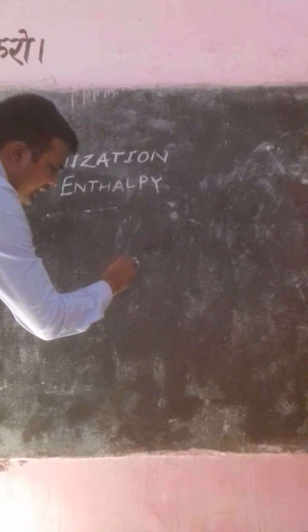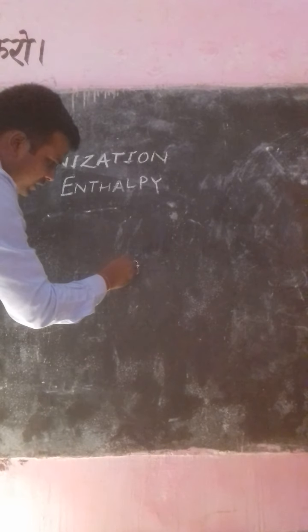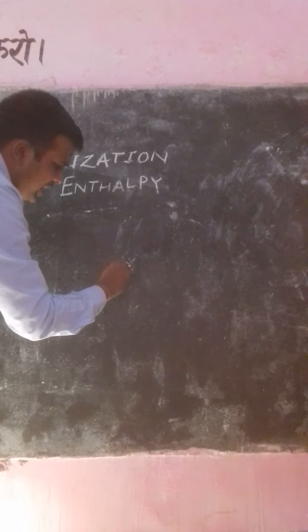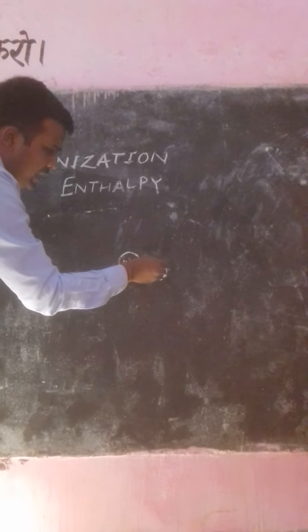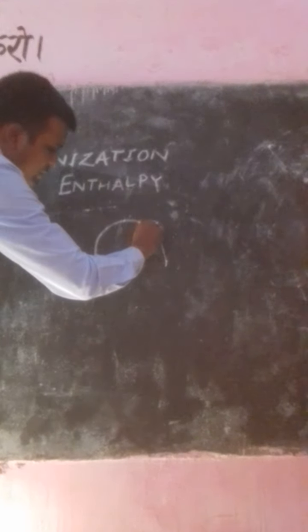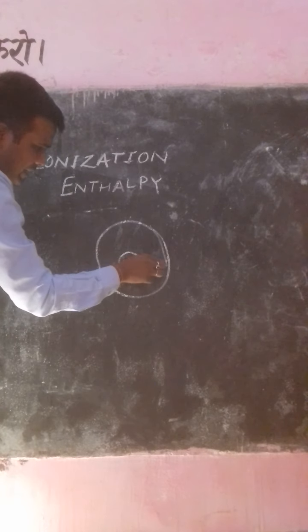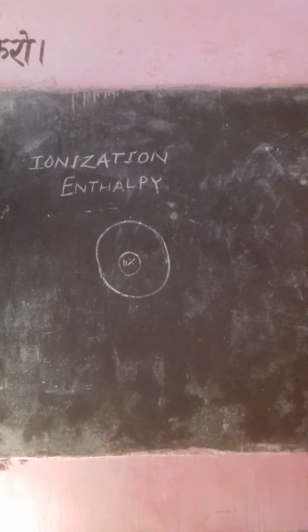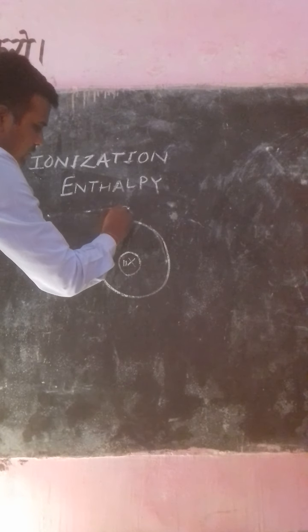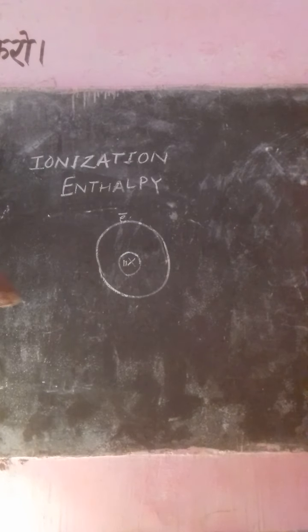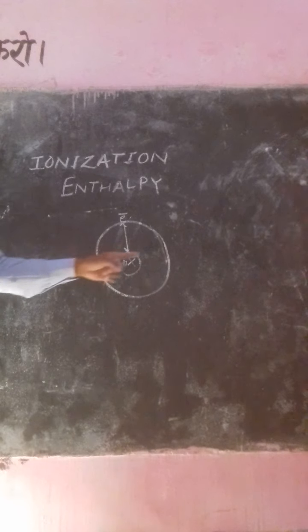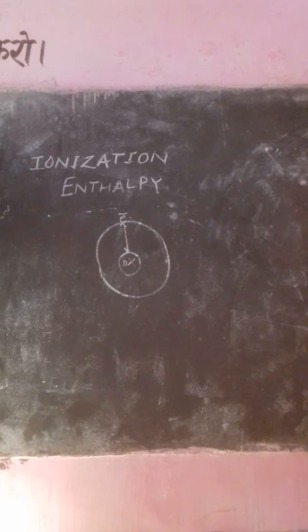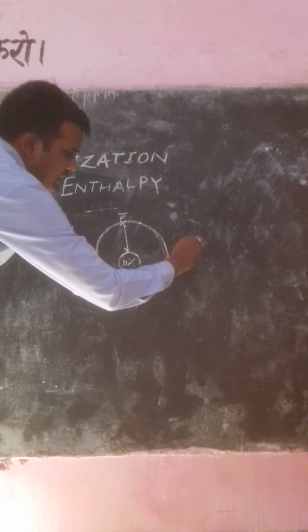We have taken an atom X. Suppose X has atomic number 11. It means 11 protons are present here, along with 11 electrons. I am representing here only the outermost shell. If the atomic number is 11, the outermost shell will contain one electron. So whatever energy will be required to release an electron from this isolated gaseous atom will be called IE1.